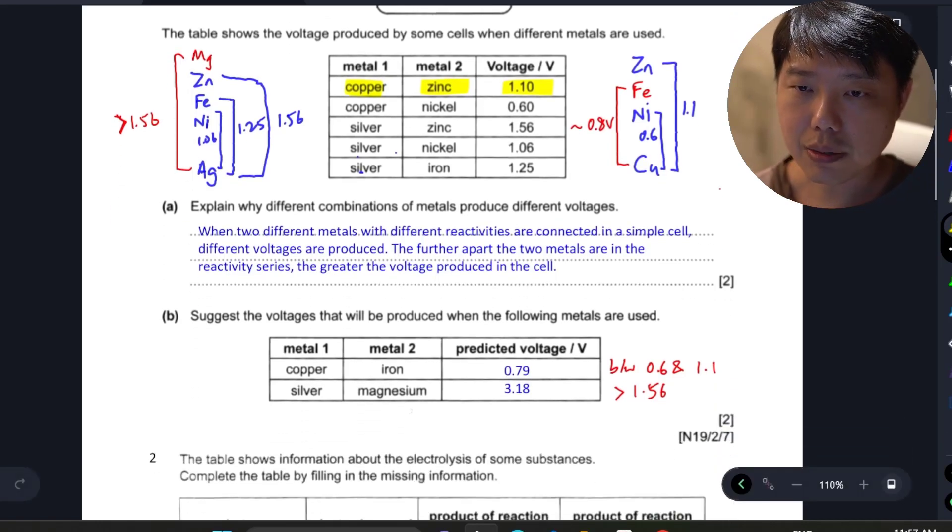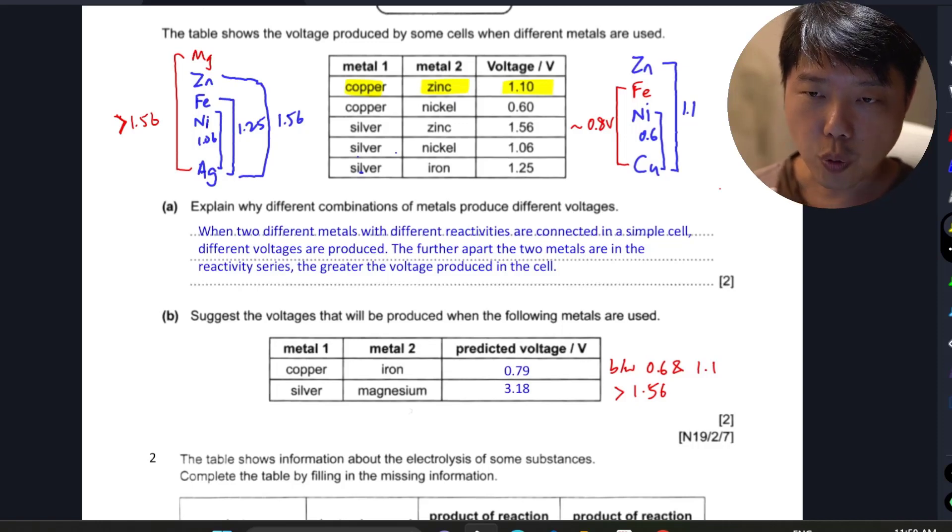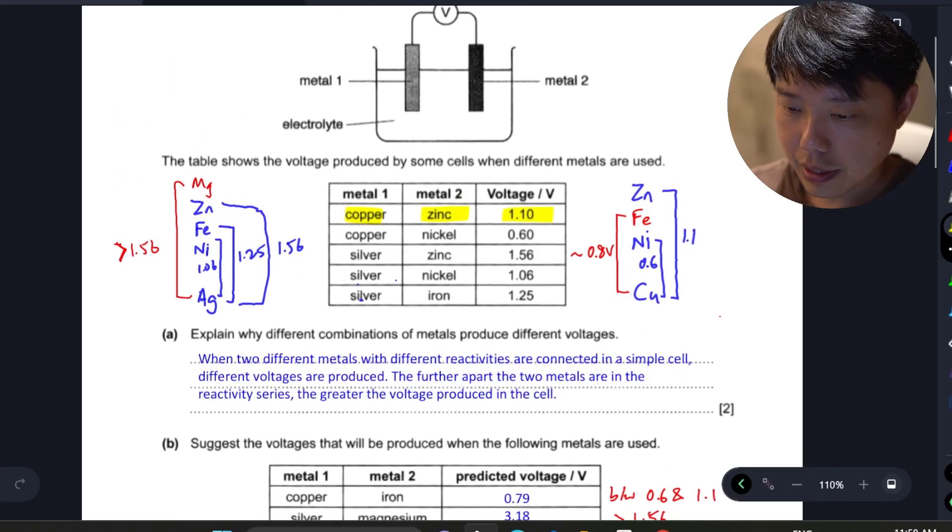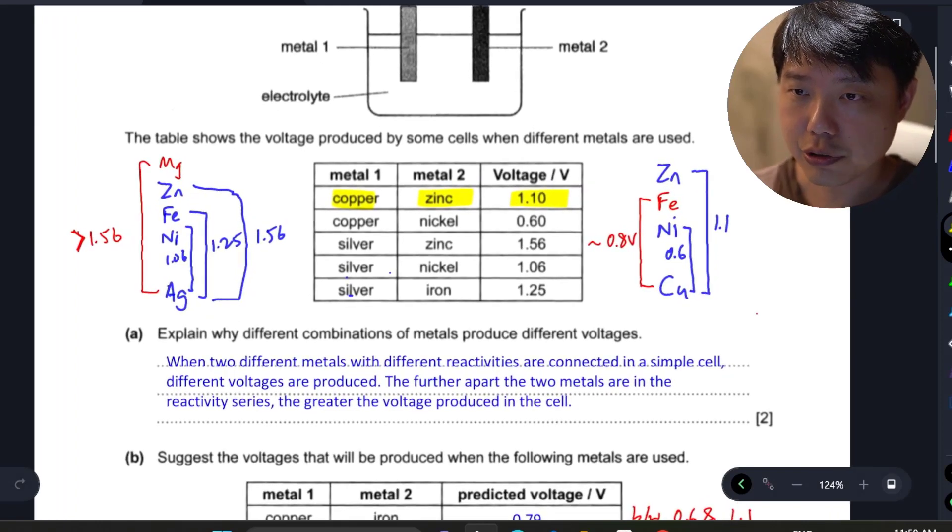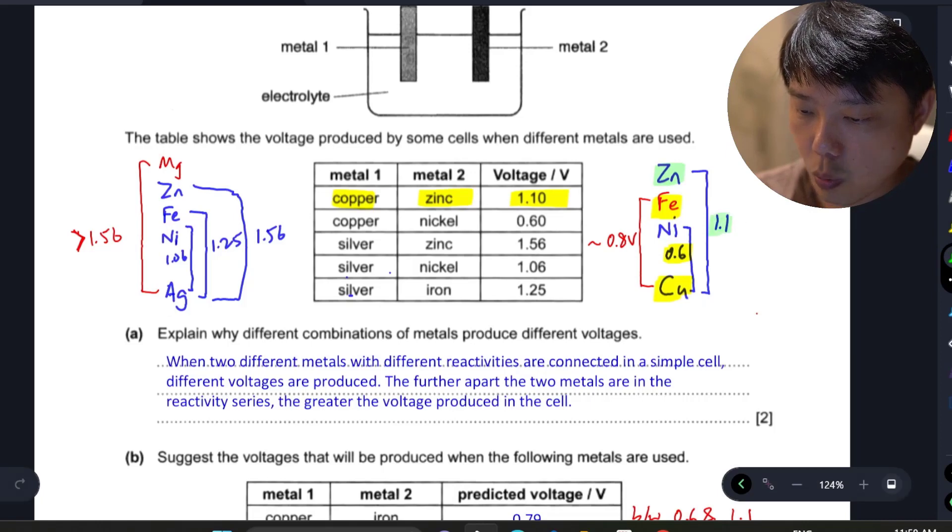The second part suggests the voltage that will be produced when the following metal pairings are used. For copper and iron, illustrated here, they've given two other examples in the table: copper and nickel generated 0.6 volts, and copper and zinc generated 1.1 volts.